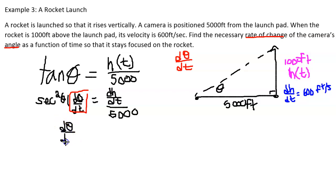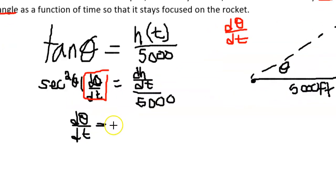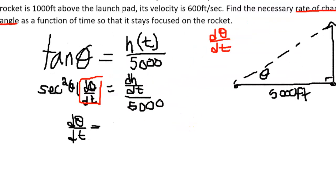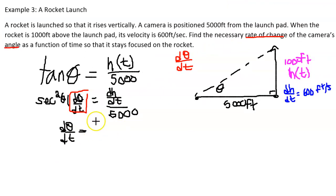dθ/dt equals dh/dt divided by 5000 secant squared theta.